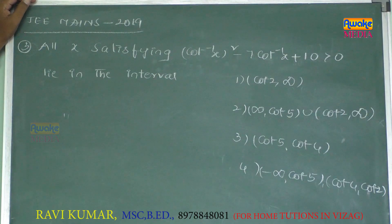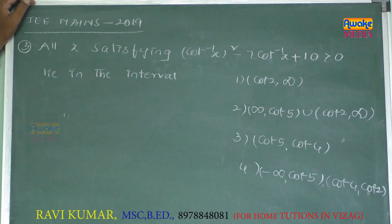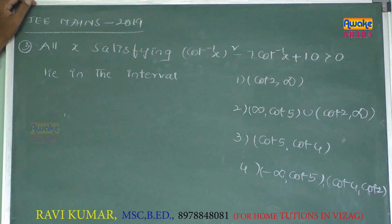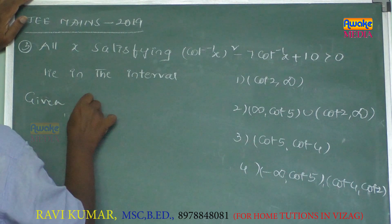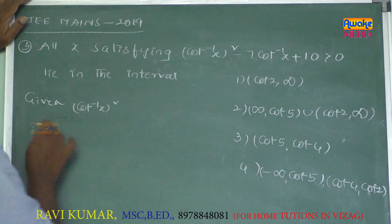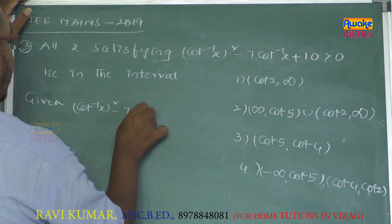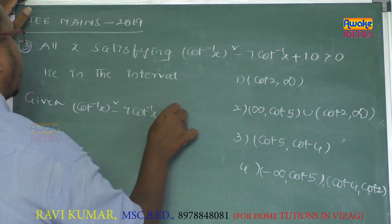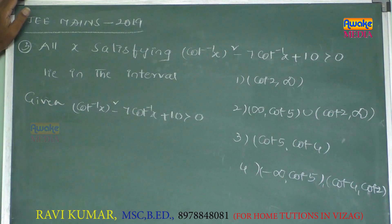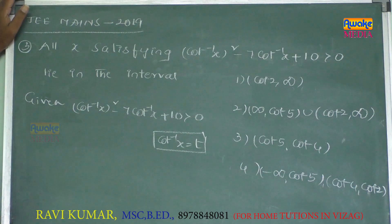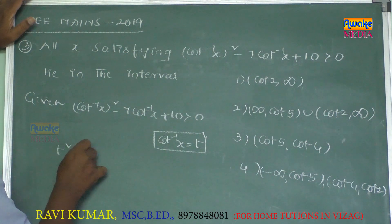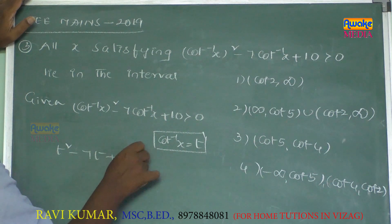Next: find all x satisfying cos⁻¹(x)² - 7cos⁻¹(x) + 10 greater than 0. Let t equal cos⁻¹(x). Then we write t² - 7t + 10 greater than 0.